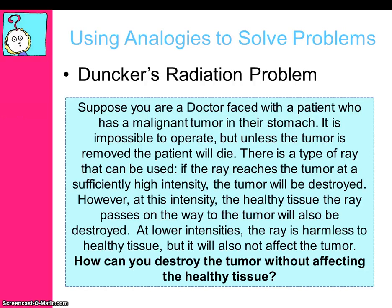Let's look at another example: Duncker's radiation problem. Suppose you are a doctor faced with a patient who has a malignant tumour in their stomach. It is impossible to operate, but unless the tumour is removed, the patient will die. There is a type of ray that, if it reaches the tumour at a sufficiently high intensity, will destroy the tumour. However, at this intensity, the healthy tissue the ray passes through on the way to the tumour will also be destroyed. At lower intensities, the ray is harmless to healthy tissue but does not affect the tumour. How do you destroy the tumour without affecting the surrounding healthy tissue?